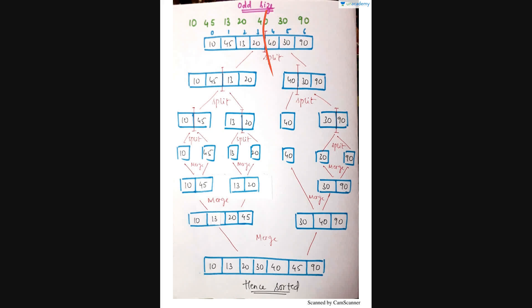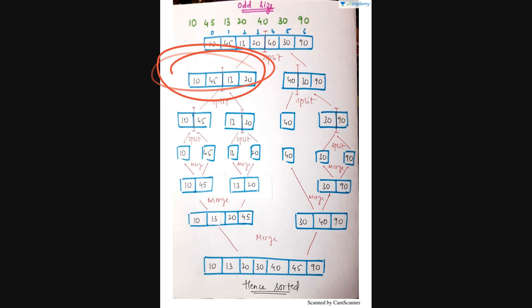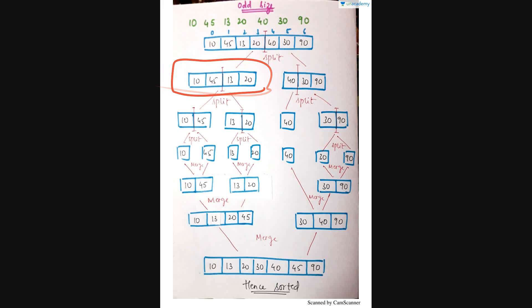The split happens between 20 and 40 — so 10, 45, 13, 20 form one part of four elements, and 40, 30, 90 form the other part of three elements. The four-element part is straightforward to split further, but the three-element part is a bit different.